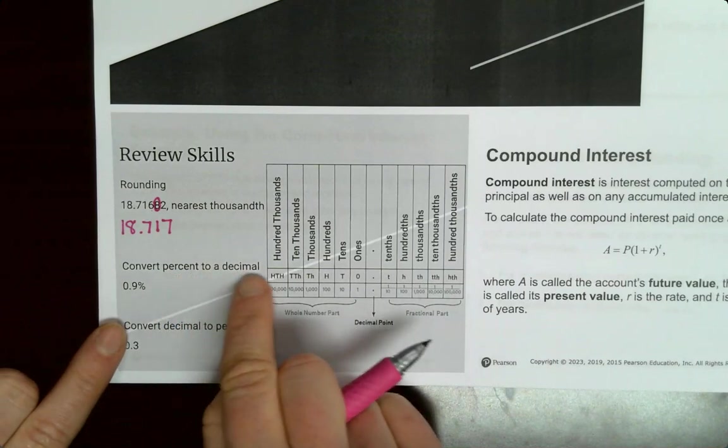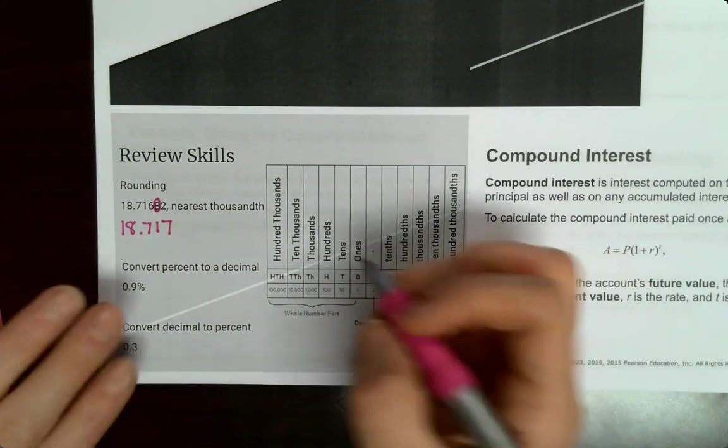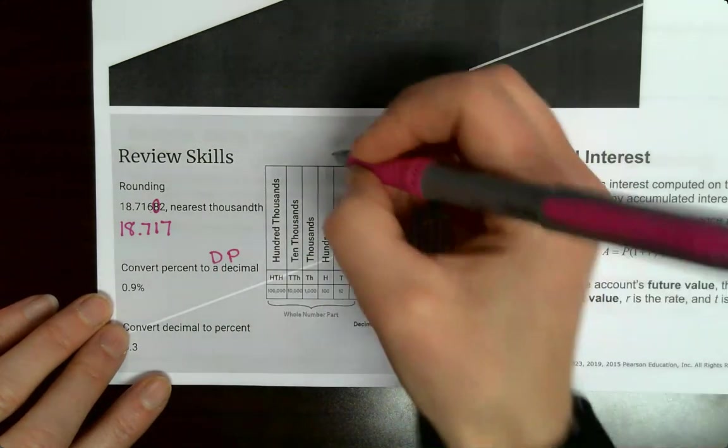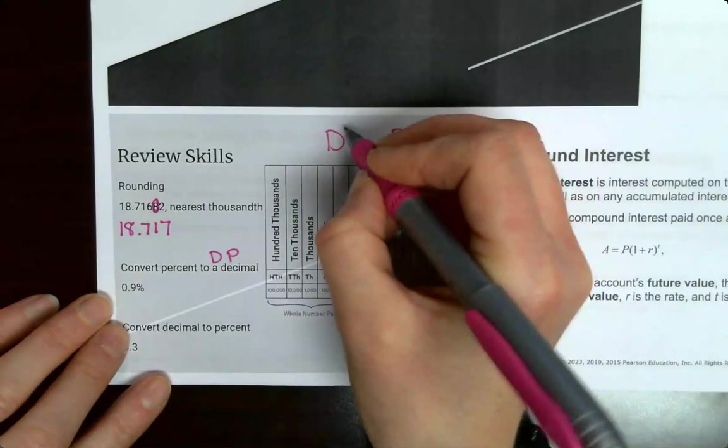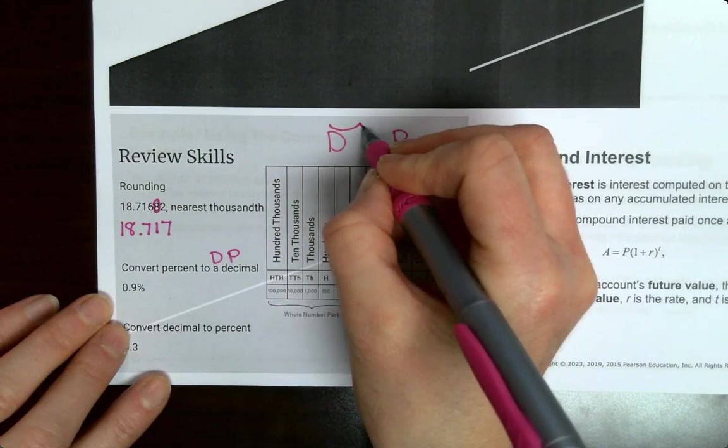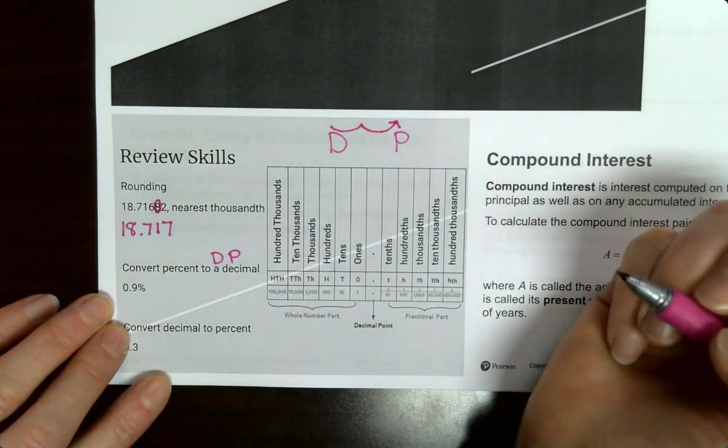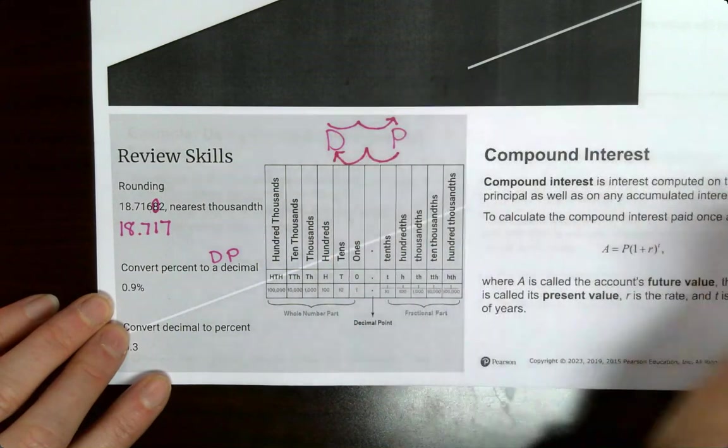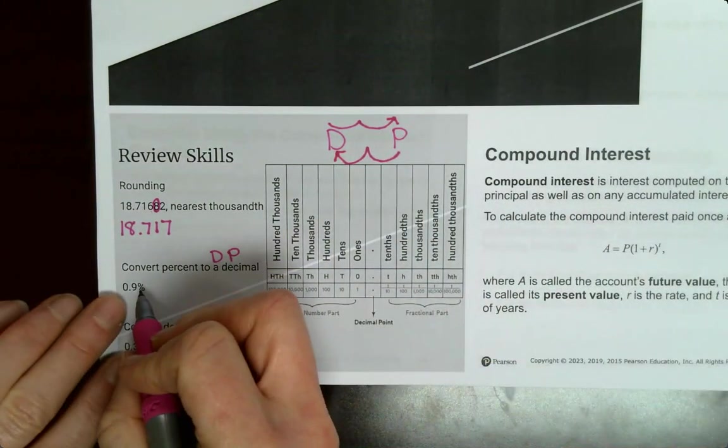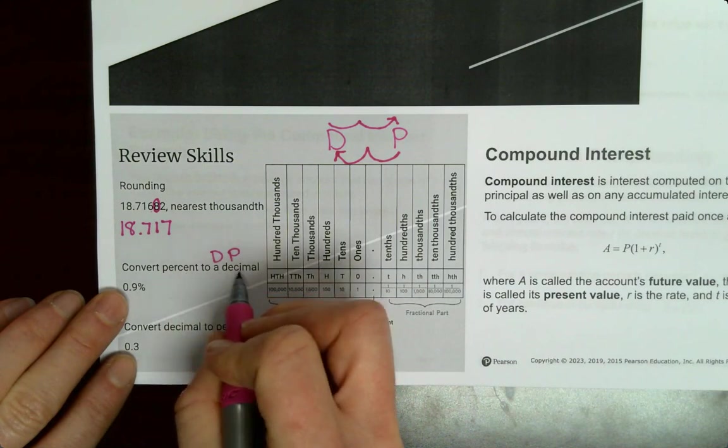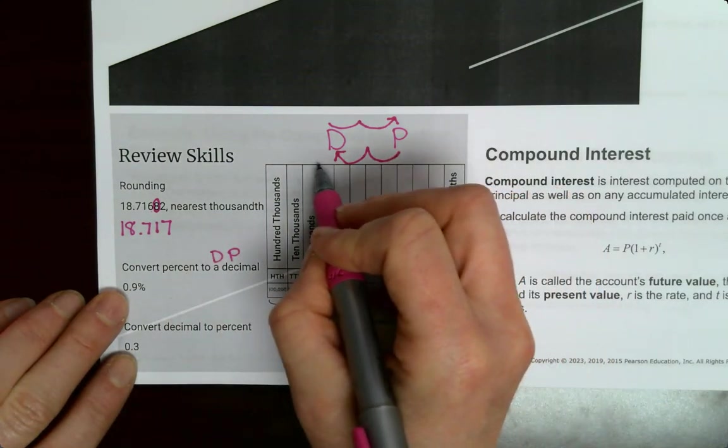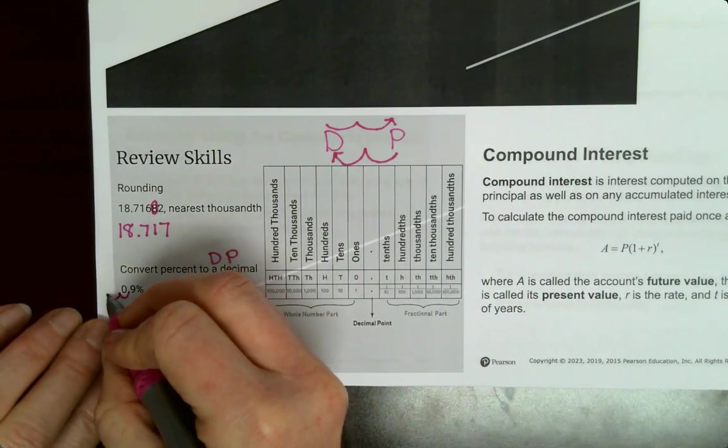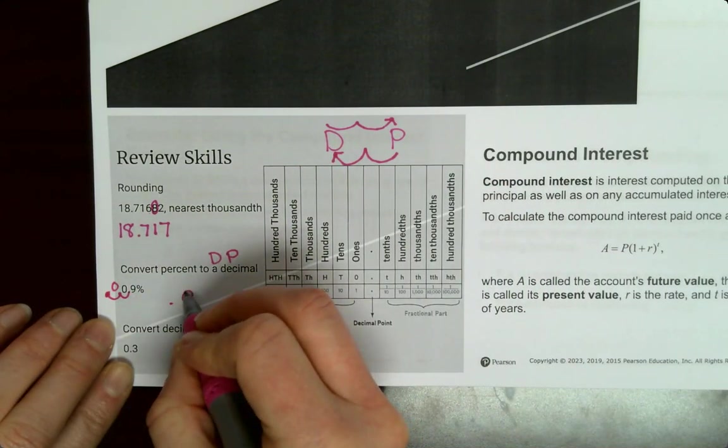Convert percent to a decimal. So one way you could do that is DP. Decimal to percent. If you're going decimal to percent, you move it two places to the right. From percent to decimal, we move two places to the left. So since we're converting from percent to decimal, I'm going to go left. One, two, 0.009.